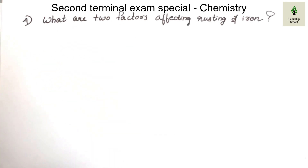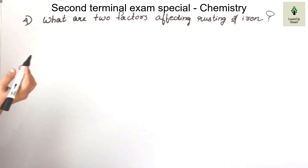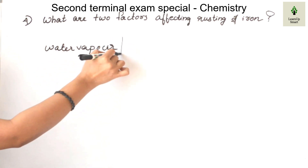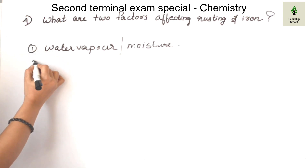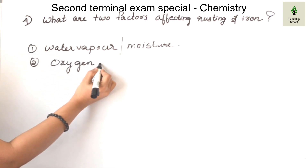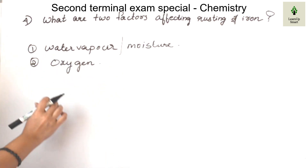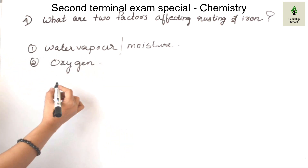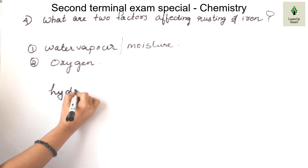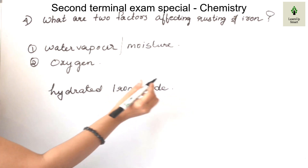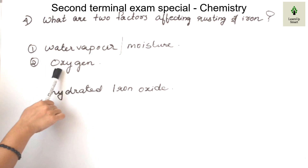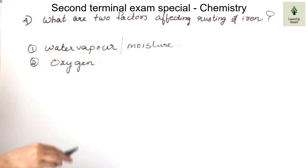What are the two factors affecting the rusting of iron? The two factors are moisture and oxygen. Iron reacts with oxygen in the atmosphere to form hydrated iron oxide. These are the two main factors. That is why we learn how iron rusting happens.